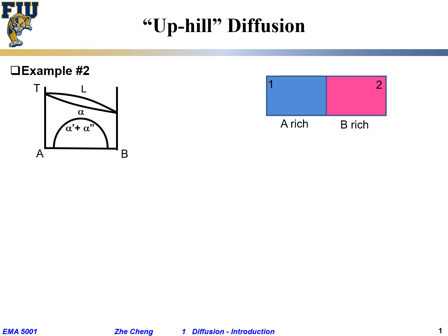Let's look at a different scenario with a related phase diagram. In this binary system, component A is on one side, component B on the other. Above the liquidus line we have a uniform liquid solution; below the solidus line we initially have a single-phase solid solution of alpha. But below the solidus line we have alpha prime plus alpha double prime — a two-phase region. Both phases share the same crystal structure but have different compositions and different lattice parameters. This is called a miscibility gap: a binary system with a miscibility gap.